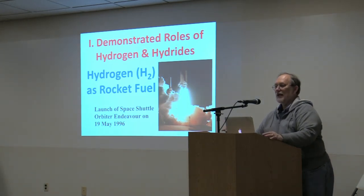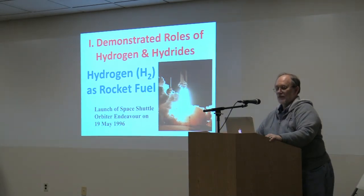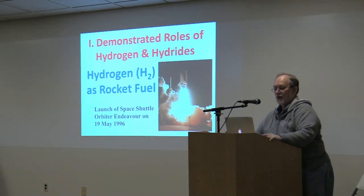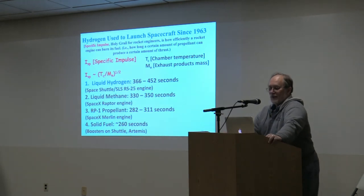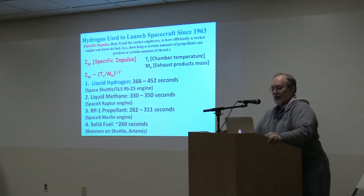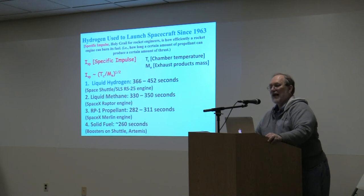The number one use of hydrogen by quantity is as rocket fuel. This photo shows Space Shuttle Endeavour being launched in 1996 — a mission on which I had an instrument that flew. Hydrogen has been used to launch spacecraft since 1966. It's in many ways the most versatile and widely used rocket fuel. The key figure of merit is specific impulse (Isp), which relates chamber temperature to exhaust product mass. Liquid hydrogen burned with liquid oxygen achieves Isp values of roughly 366 to 452 seconds.